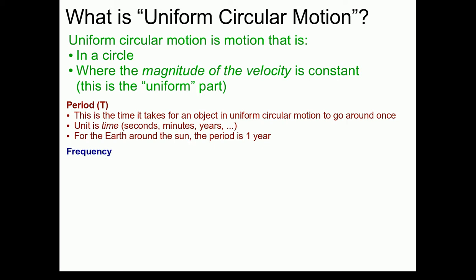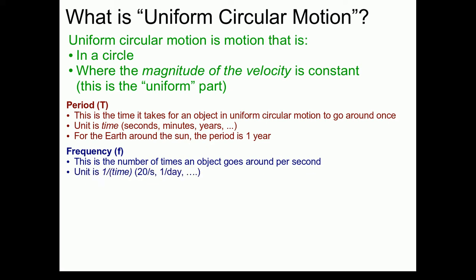Another related quantity is frequency, which we represent by the letter F. Frequency is the number of times an object goes around per second when undergoing Uniform Circular Motion. Since it's per second, the unit is one over time — so it could be something like 20 times a second or once per day. For example, the frequency of the Earth's rotation is once per day, or 1.1 times 10 to the minus 5 per second.